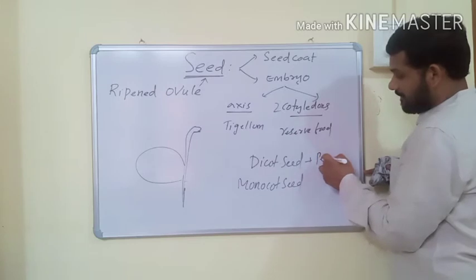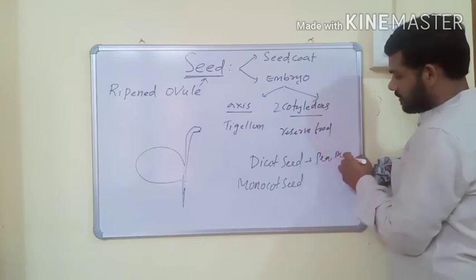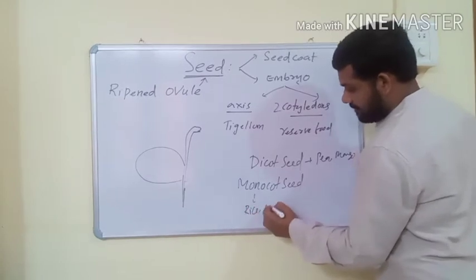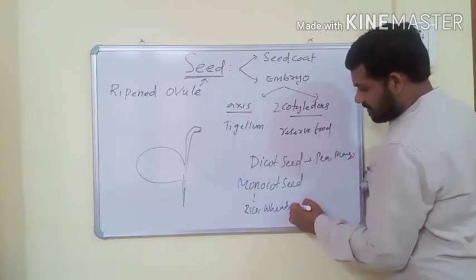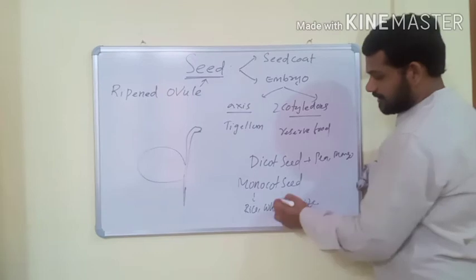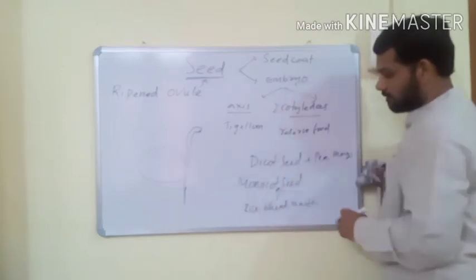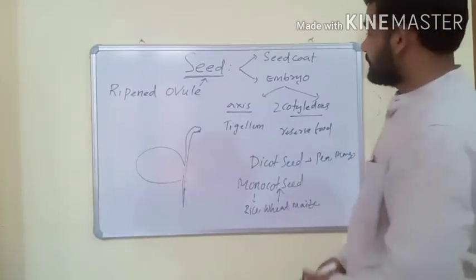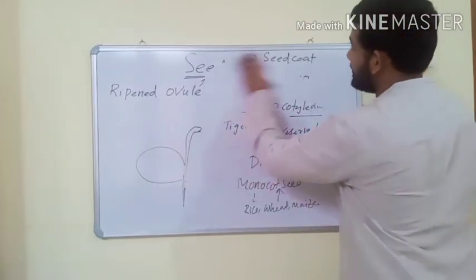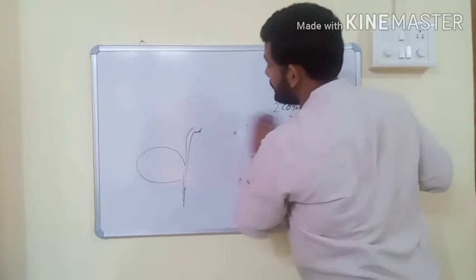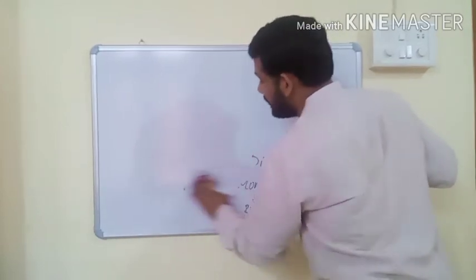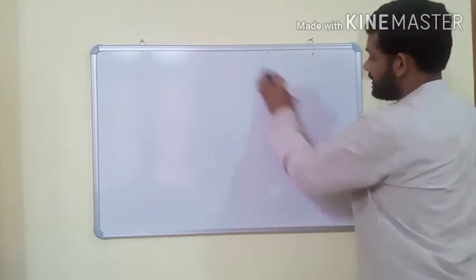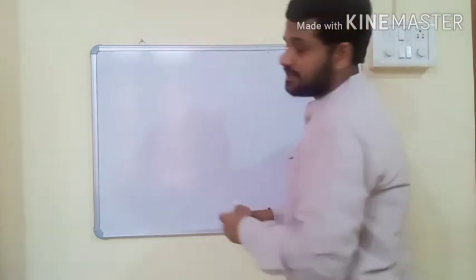Depending on the number of cotyledons, seeds are divided into two types: dicot seed and monocot seed. Now we will see the structure of dicot seed. Examples of dicot seeds include pea, castor, and beans. The embryo has an embryonal axis called tigellum, and two cotyledons.